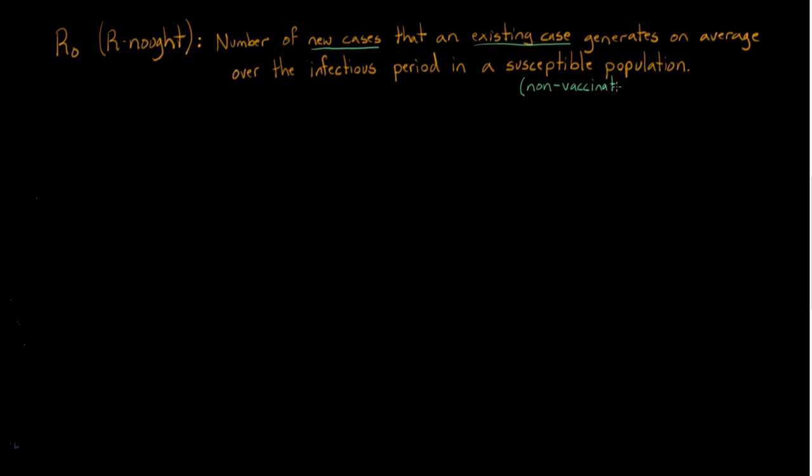So the way to think about this is to put it into math terms. So if you have existing cases here and you have new cases, you can just take the two and divide them. You could say, well, new divided by existing is going to be R-naught.